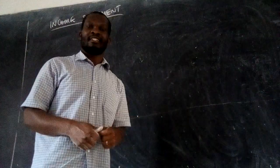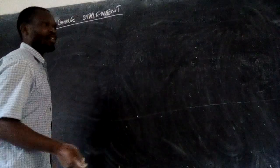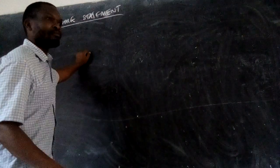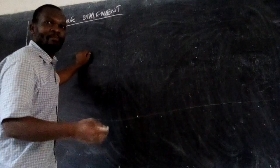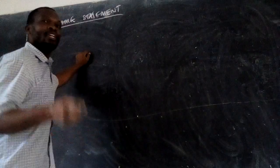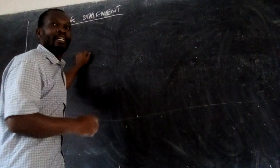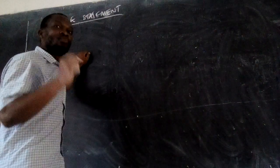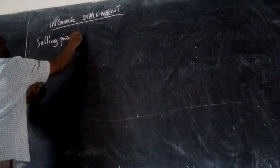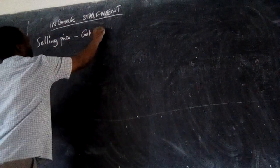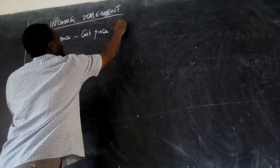In mathematics, at the primary level, you say that a business is set up to generate profits. You say that selling price minus buying price gives you profit. In this income statement, you shall find out that that profit is gross profit. So where you see selling price minus cost price equals profit.